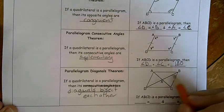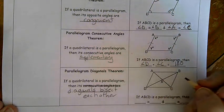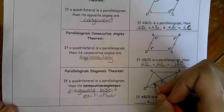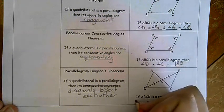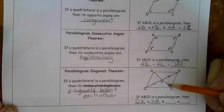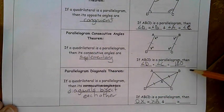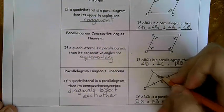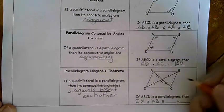So this diagonal here, DB, if it is bisected, that means DX is congruent to XB. AC is our next diagonal. It is bisected by DB, so that means AX is congruent to XC.